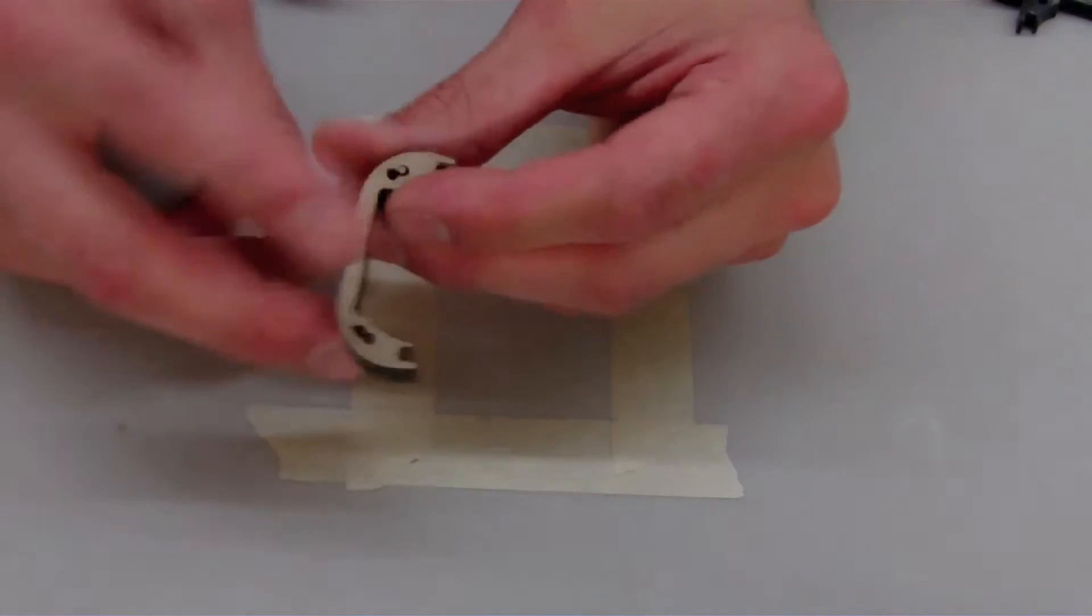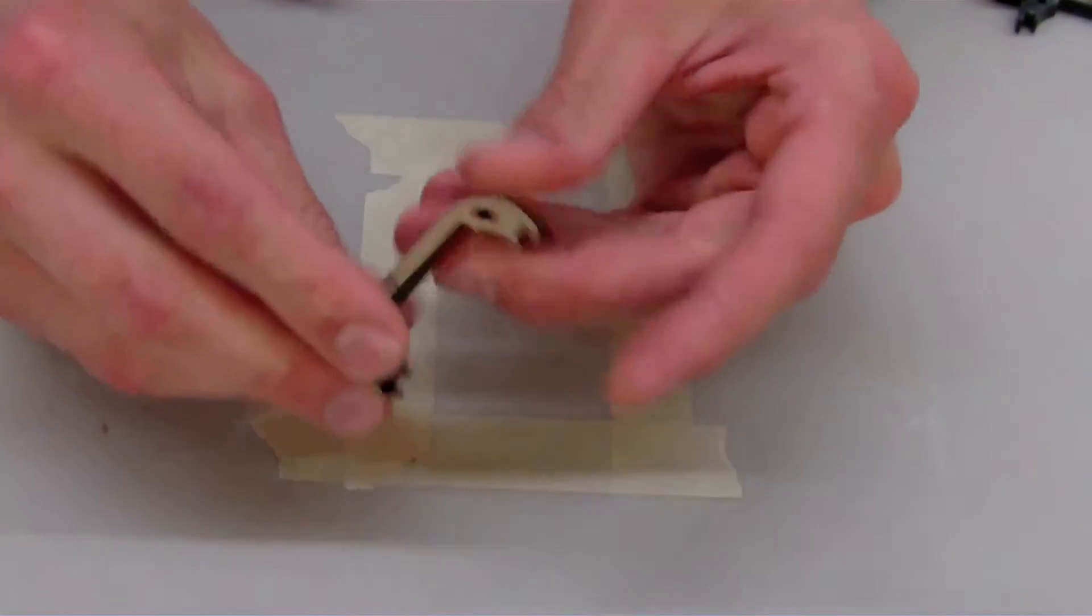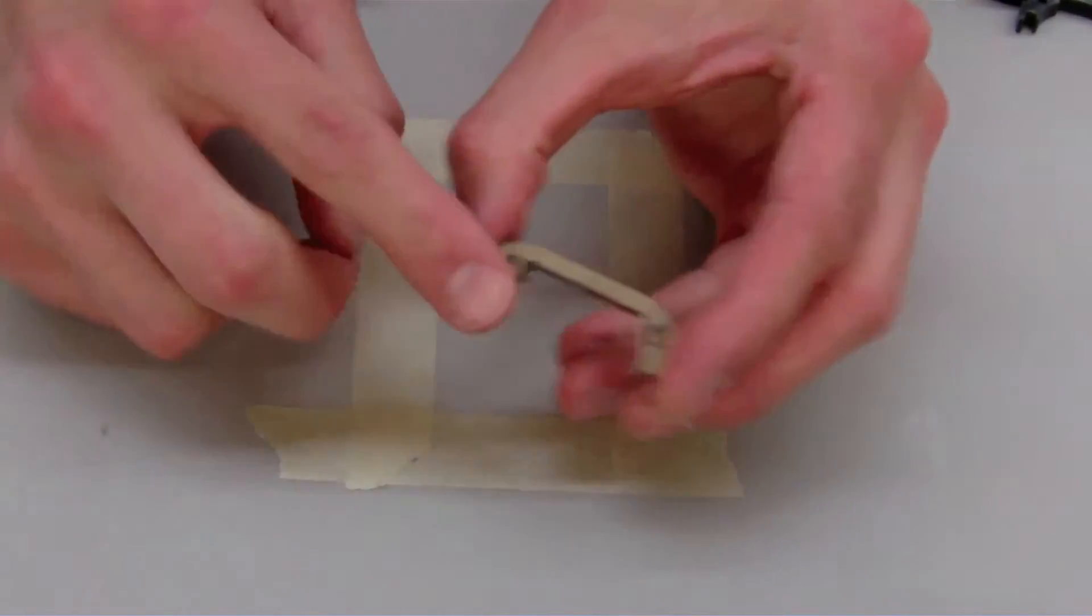But before you peel the tape off, there's something to do. Because of the laser cutting, there's a little lip on the edges of these edge pieces.